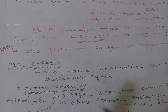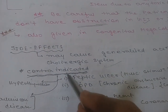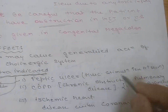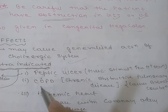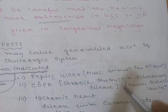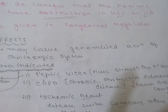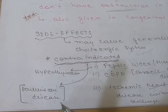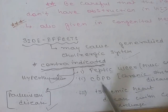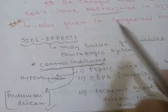Side effects of bethanechol include generalized stimulation of the cholinergic system. Contraindications: it should not be given in peptic ulcer because muscarinic stimulation can increase acid secretion. It should not be given in chronic obstructive pulmonary disease because it can cause bronchoconstriction. It should not be given in ischemic heart disease associated with coronary artery blockage, Parkinson's disease, or hyperthyroidism, as these conditions can be worsened by the drug.